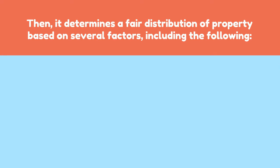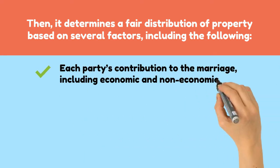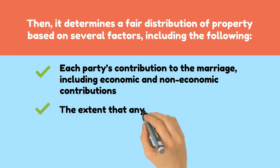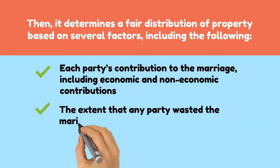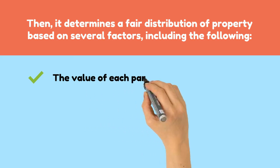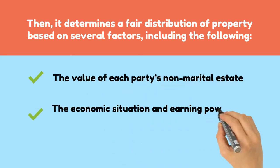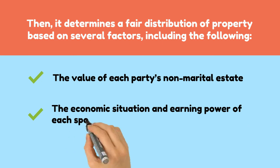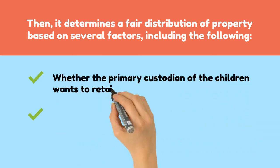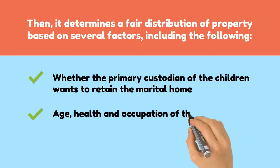These factors include: each party's contribution to the marriage, including economic and non-economic contributions; the extent that any party wasted the marital estate; the value of each party's non-marital estate; the economic situation and earning power of each spouse; whether the primary custodian of the children wants to retain the marital home; and the age, health, and occupation of the parties.